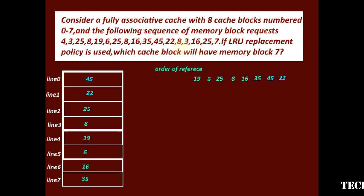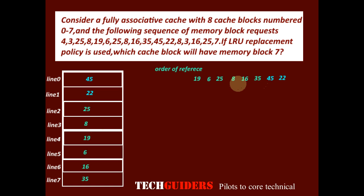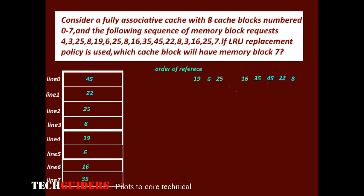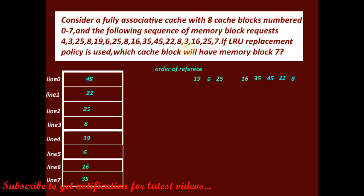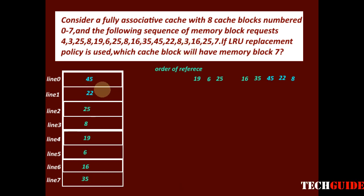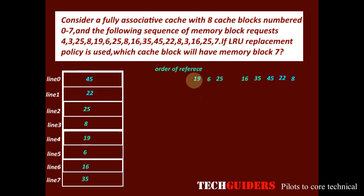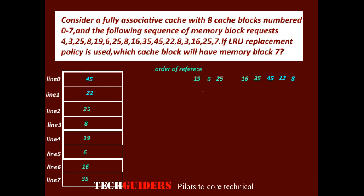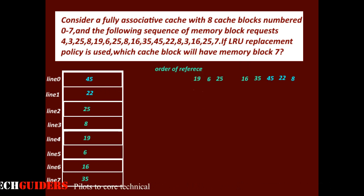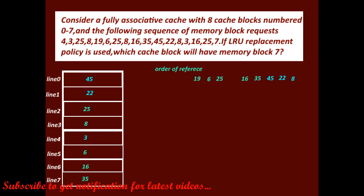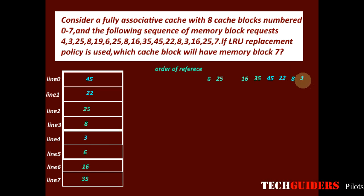After block 22, we have a request for block 8. Block 8 is already in the cache, making it a cache hit; it becomes the most recently used in the order of reference. After 8, there is a request for block 3. Block 3 is not in the cache, so we replace the least recently used block, which is block 19. Block 19 is replaced with block 3, and 3 becomes the most recently used.